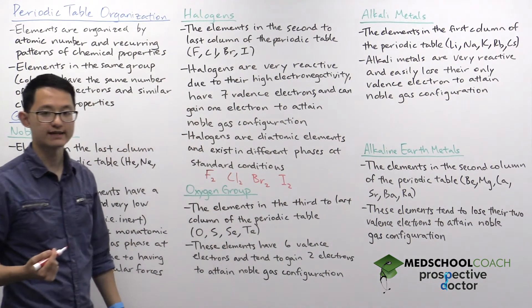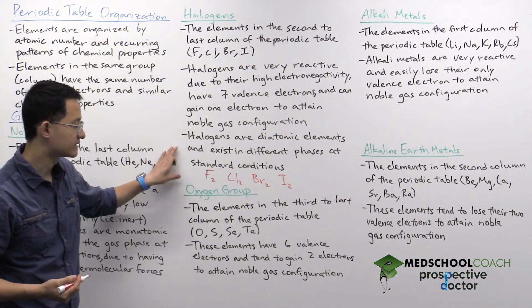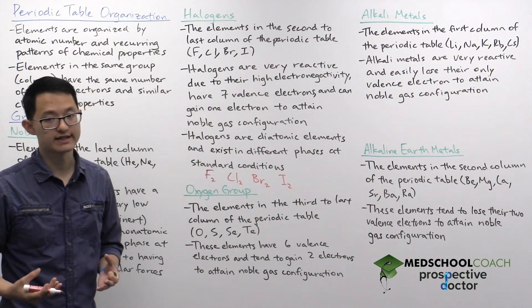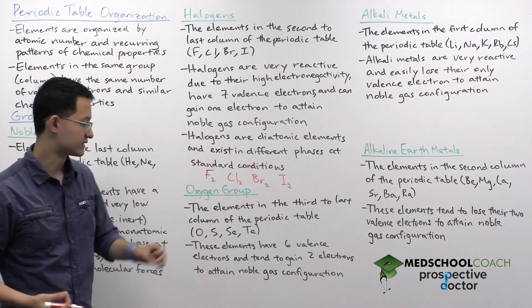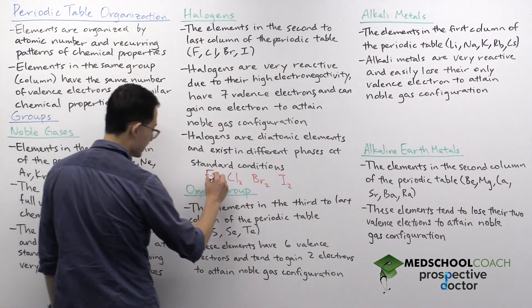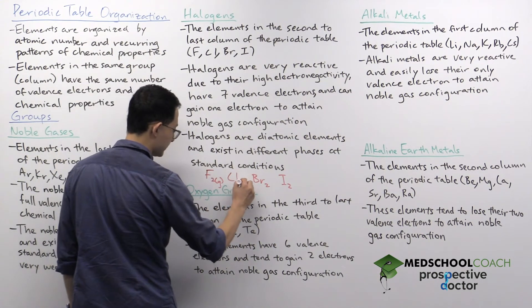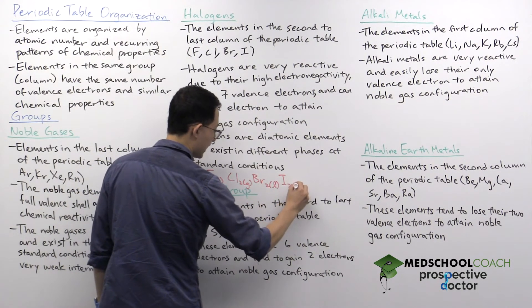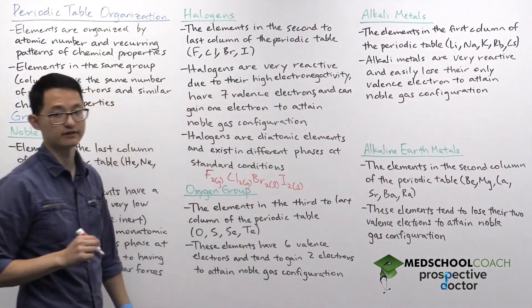Another difference from noble gases is that our halogens exist in different phases at standard conditions. This means that there are substantial differences in the strengths of their intermolecular forces. And as it turns out, fluorine and chlorine are both gases. Bromine is a liquid, and iodine is a solid at standard conditions.